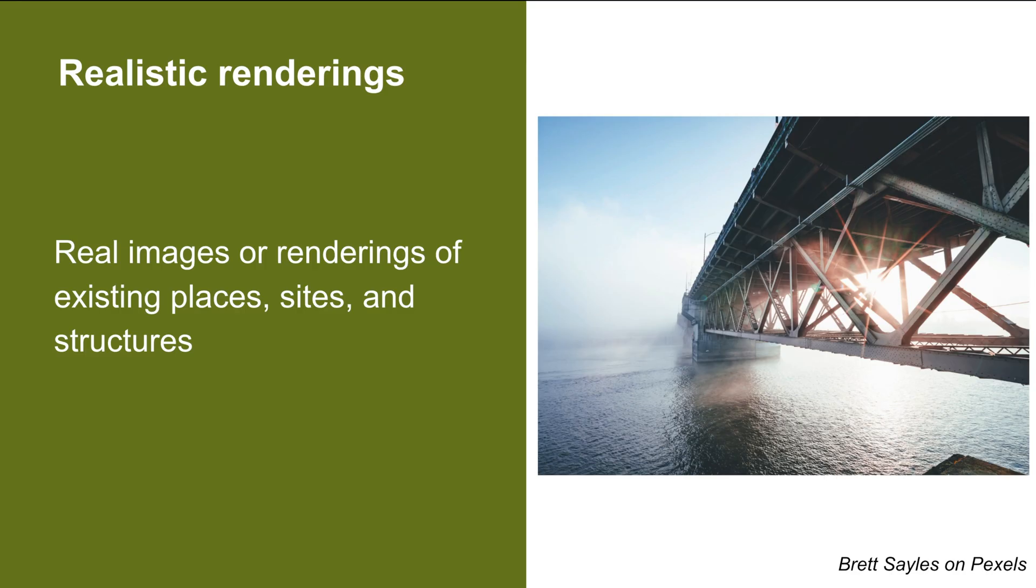The next category of visuals is realistic renderings. This category includes real images of existing places, sites, and structures or detailed renderings of them. For example, if you are assessing the condition of a bridge, your report would include real images to show the structure's actual condition.